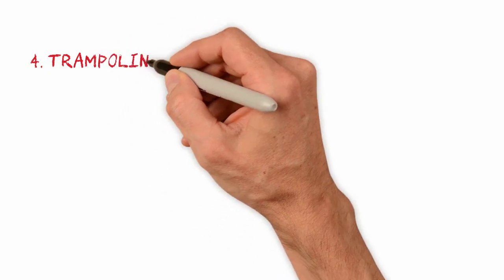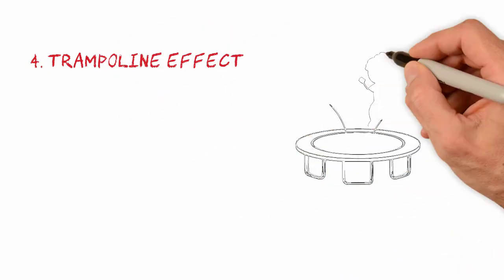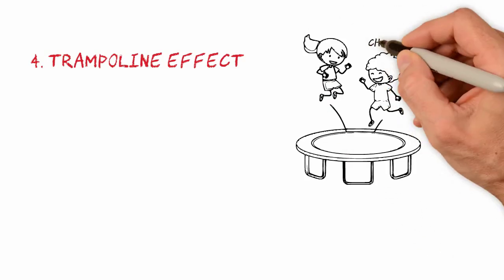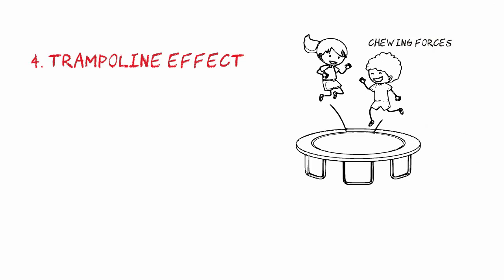Analogy number four is the trampoline effect. There is a hypothesis, with no scientific evidence, that states that the intermittent forces of mastication are capable of reactivating elastic modules used in the closing of spaces.